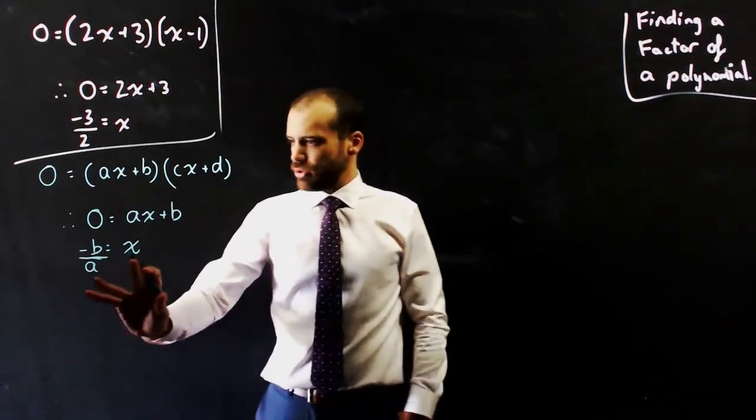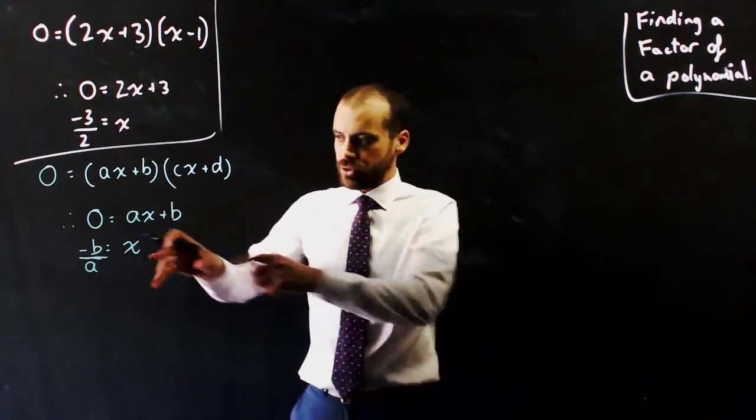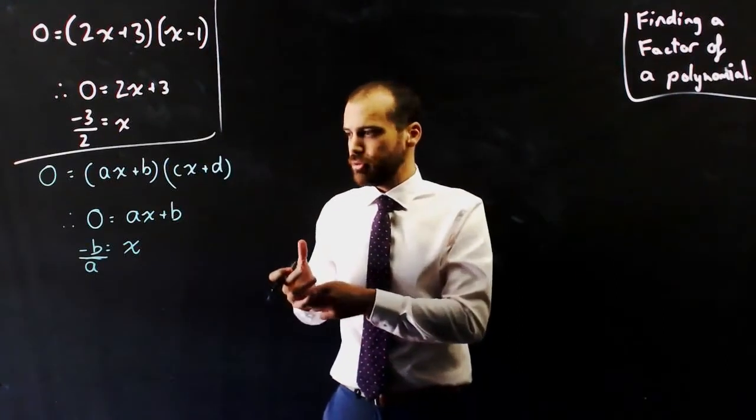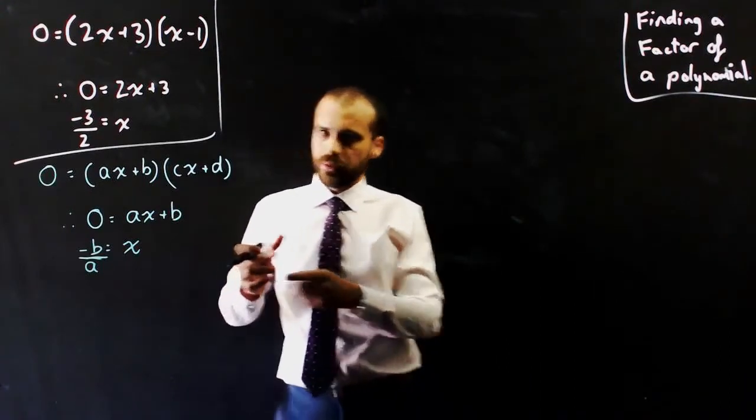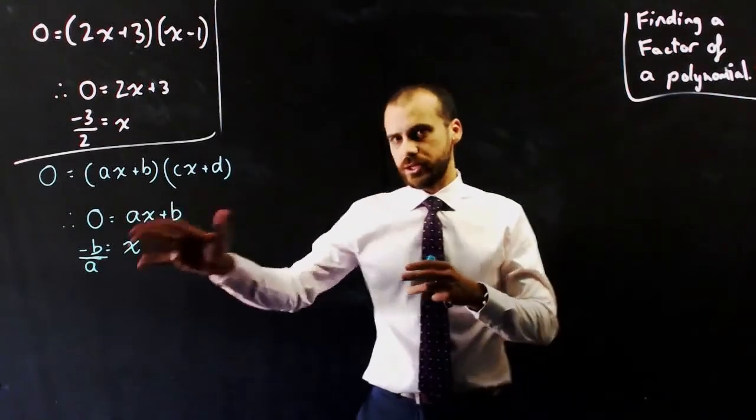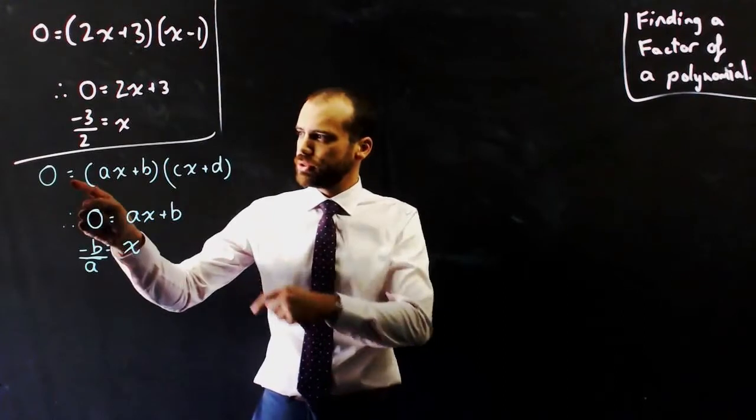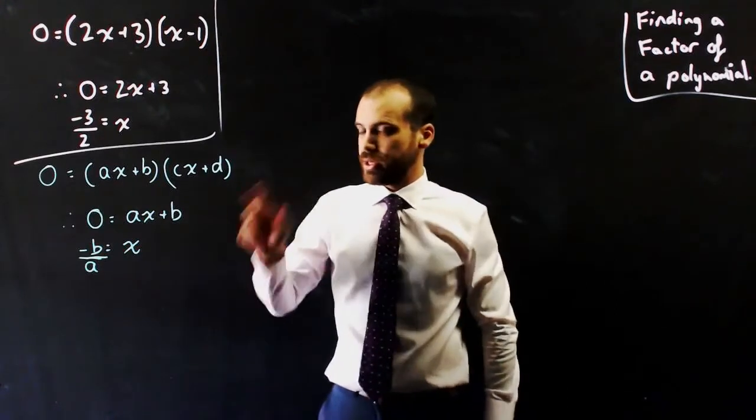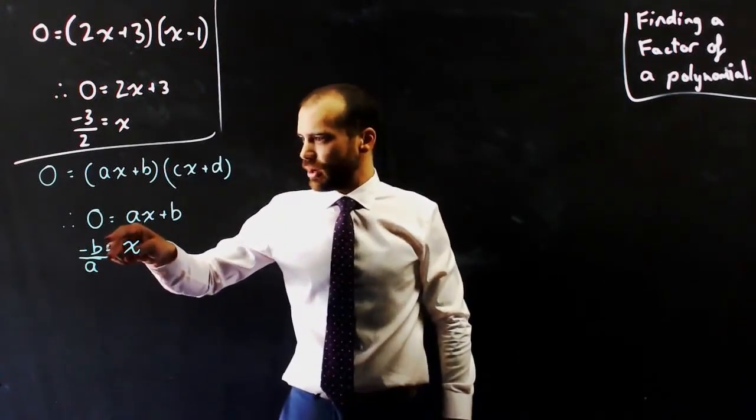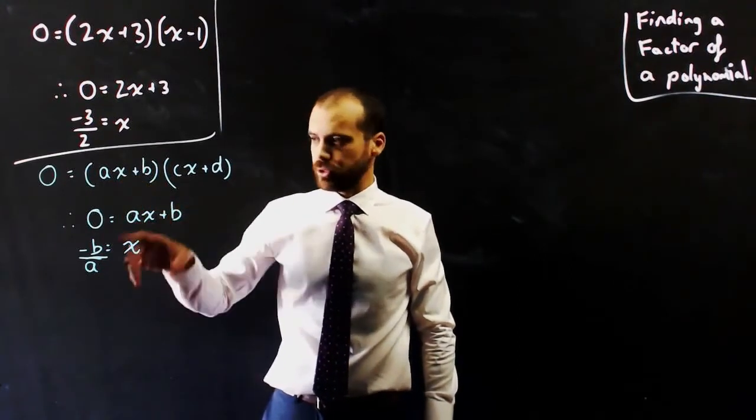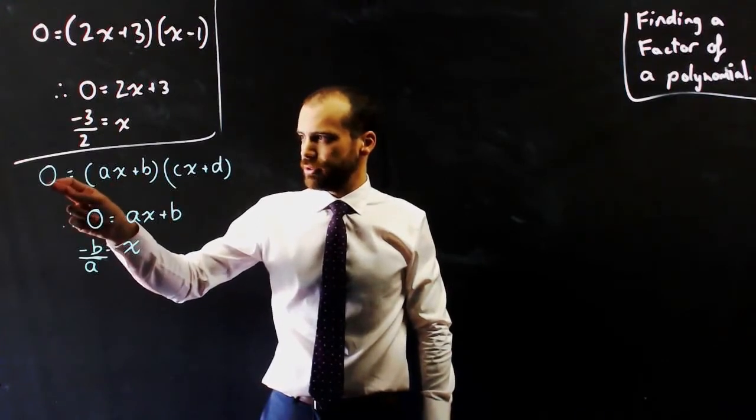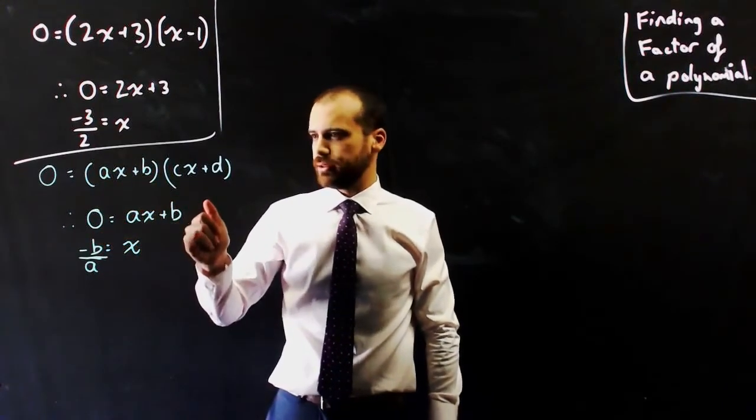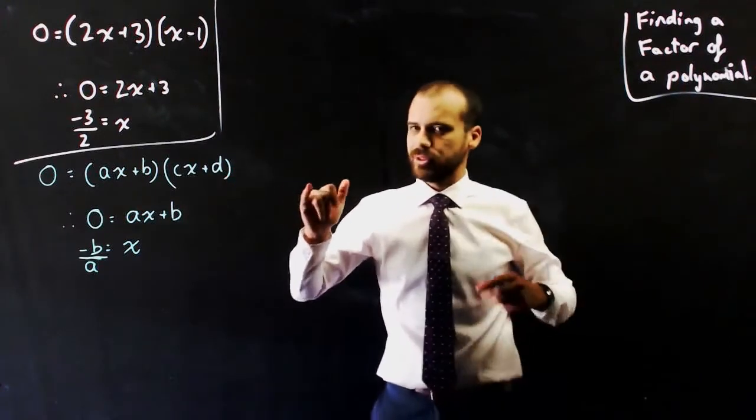Okay. Now, that's told me the root of it, but I can now use that result to reverse engineer a factor of a polynomial. Now, what do I mean by that? What this equation says is that this polynomial will be equal to 0 if the x value is negative b on a. Now, we can use that result to say that if I can find a value for x in a polynomial that gives me an answer of 0, I'll know that one of the factors will be negative b on a.